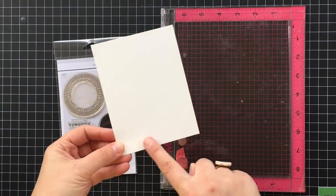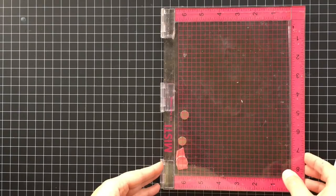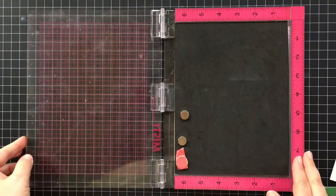I've already trimmed this paper to four inches by five and a quarter inches and I'm also going to be using my MISTI stamp tool.